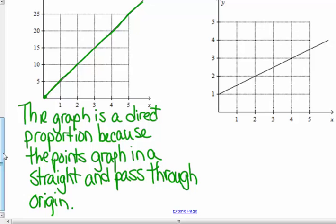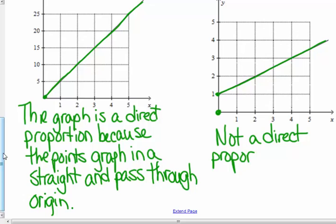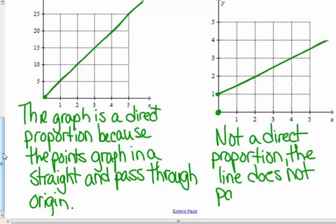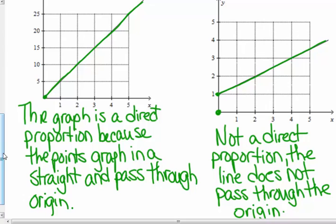Letter D — it looks like the points lie in a straight line. However, the points do not pass through the origin. They're not at (0, 0) — it's up one, so its Y-intercept is at (0, 1). That's not the point (0, 0). So this is not a direct proportion. It passes the straight line test, but not the going-through-the-origin test. The line does not pass through the origin. Not a direct proportion.